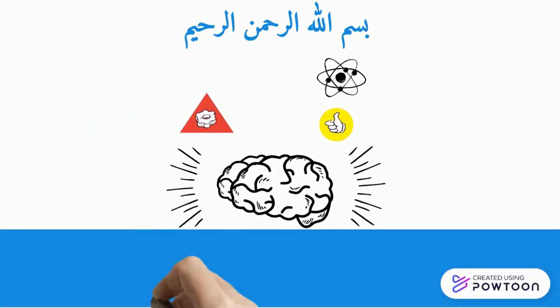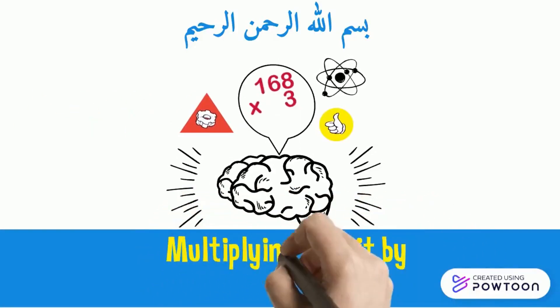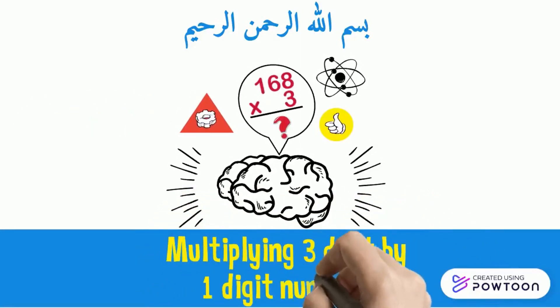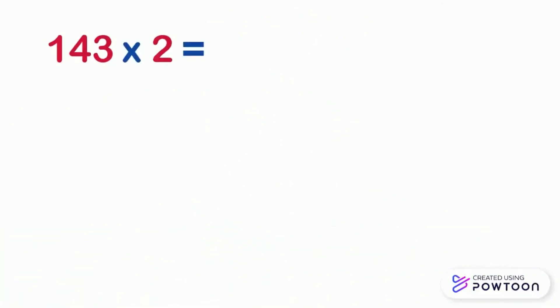Today we are going to learn how to multiply by setting up the multiplication problem in columns. Here is a multiplication problem. We will multiply 143 by 2. To find the result of this multiplication problem, we will learn together how to set it up in columns.